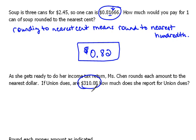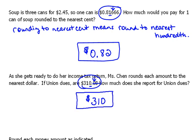Rounding to the nearest dollar means the nearest one dollar, so that's the ones position. We're going to round, looking one place to the right. Since this is a four or less, we just drop it — we don't have to do anything to the zero. So she's going to report $310 on her income taxes.